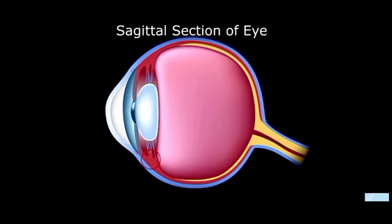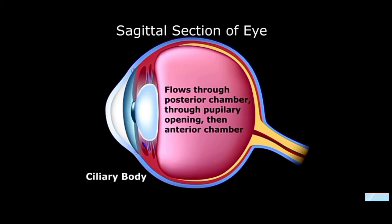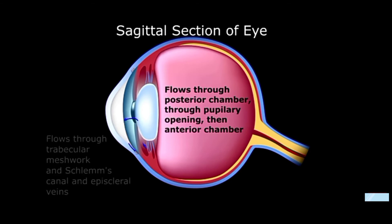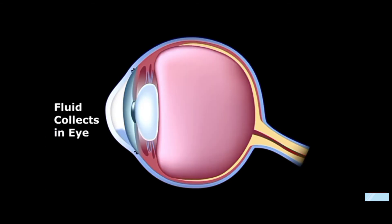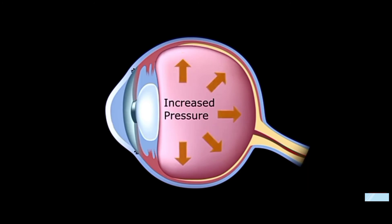Normally, the ciliary body produces the aqueous humor, which passes from the posterior chamber through the pupillary opening into the anterior chamber, heads toward the drainage angles and the trabecular meshwork, and then passes through the canal of Schlemm into the episcleral vein. In both open and closed angle glaucoma, the fluid cannot drain out of the eye, so it builds up, putting extra pressure against eye structures — particularly the optic nerve — and may cause damage that compromises the patient's vision.